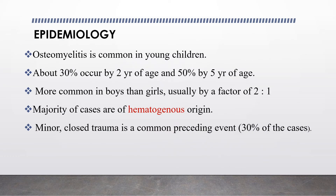Regarding the epidemiology of osteomyelitis: it is common in young children, with about 30% of cases occurring by 2 years of age and 50% by 5 years of age. Osteomyelitis is relatively more common in boys than in girls, usually by a factor of 2 to 1. The majority of cases are of hematogenous origin, and minor closed trauma is a common preceding event in around 30% of cases.